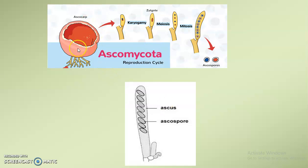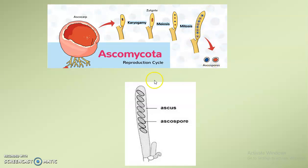In this diagram we can see the ascocarp, which is a fruiting body. Inside the ascus, the male and female nuclei fuse — karyogamy occurs — resulting in a diploid zygote. This zygote undergoes meiosis to form four haploid cells, which again undergo mitosis to form eight ascospores inside the sac-like structure ascus.